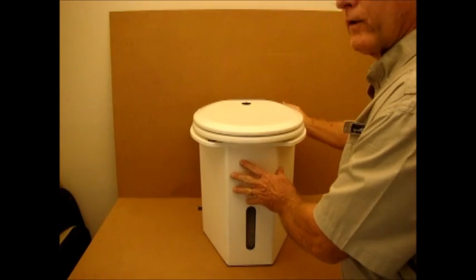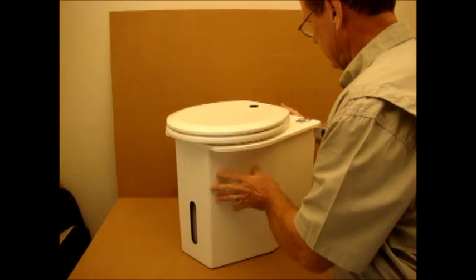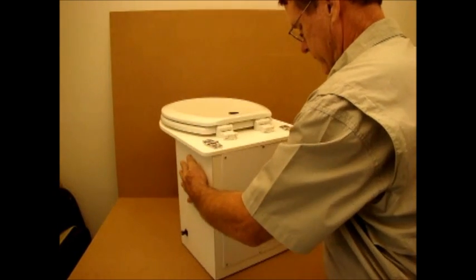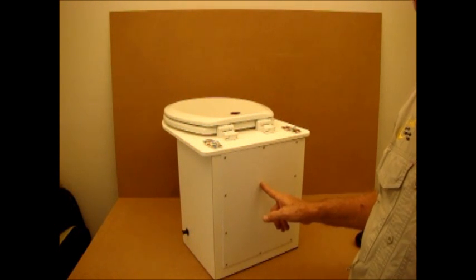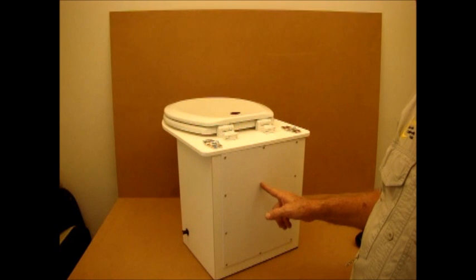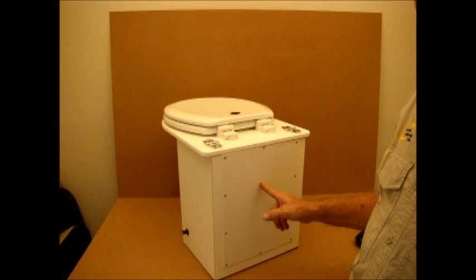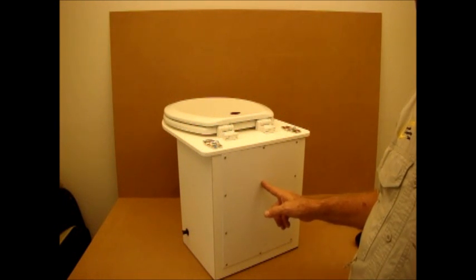The back of the Seahead on the box model has a panel. This panel can be removed if you're going to use a toilet cabinet. You can vent the system through here, and you can also run the plumbing on those Seaheads that use the EUD or external urine diverter.